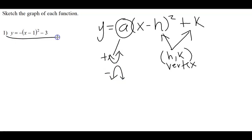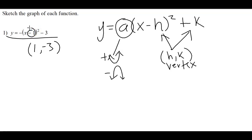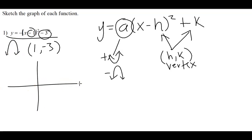When graphing in this form, we can see that H is 1 and K is negative 3. Remember, we always change the sign of the number for H, but we do not do that for K. So it's positive 1 and negative 3. My A is negative 1, so it's a sad face parabola. I would plot that point — over 1 and down 3 — and then draw a sad face parabola. That's the graph of that quadratic.